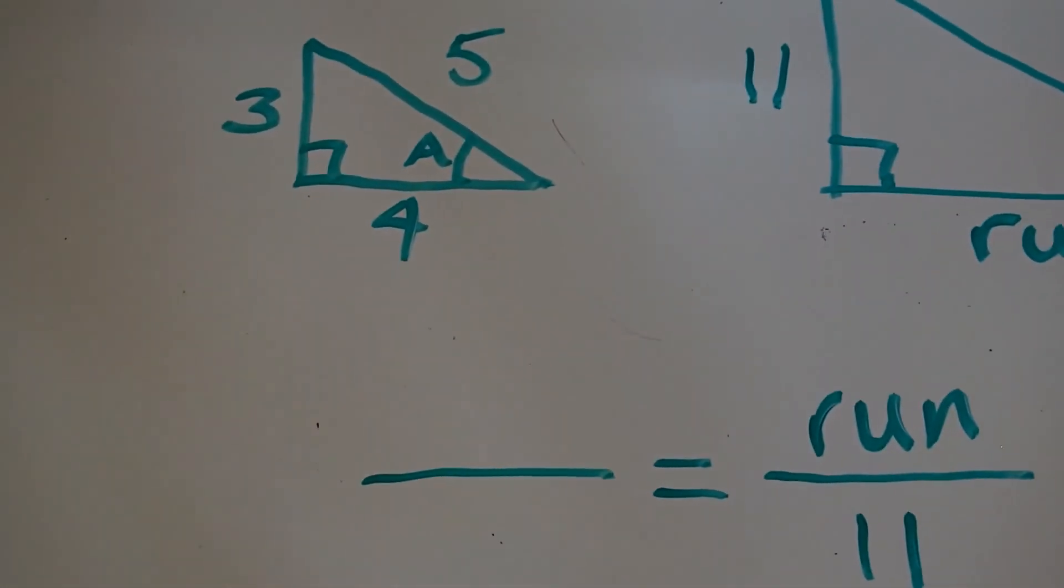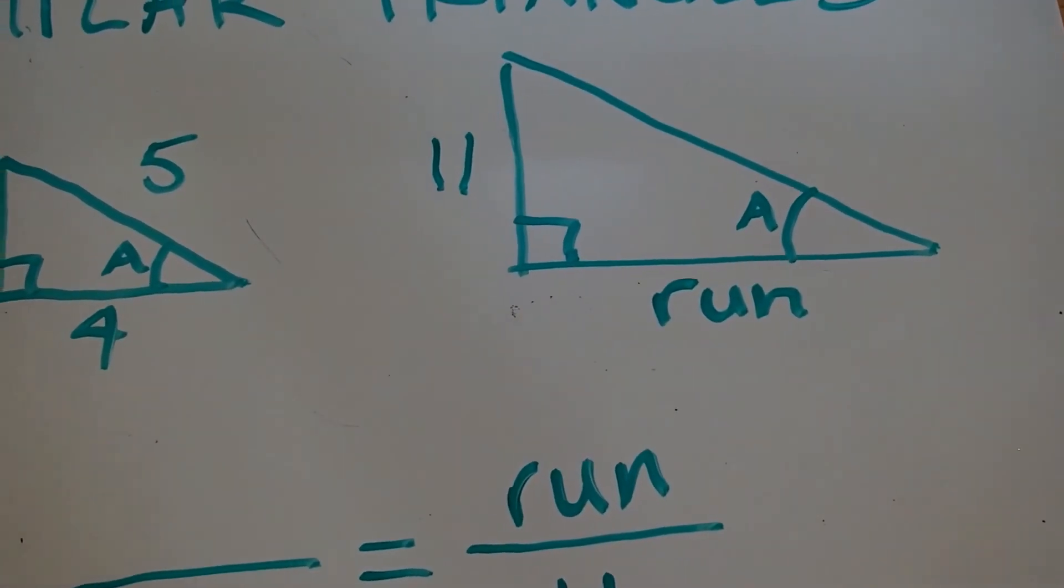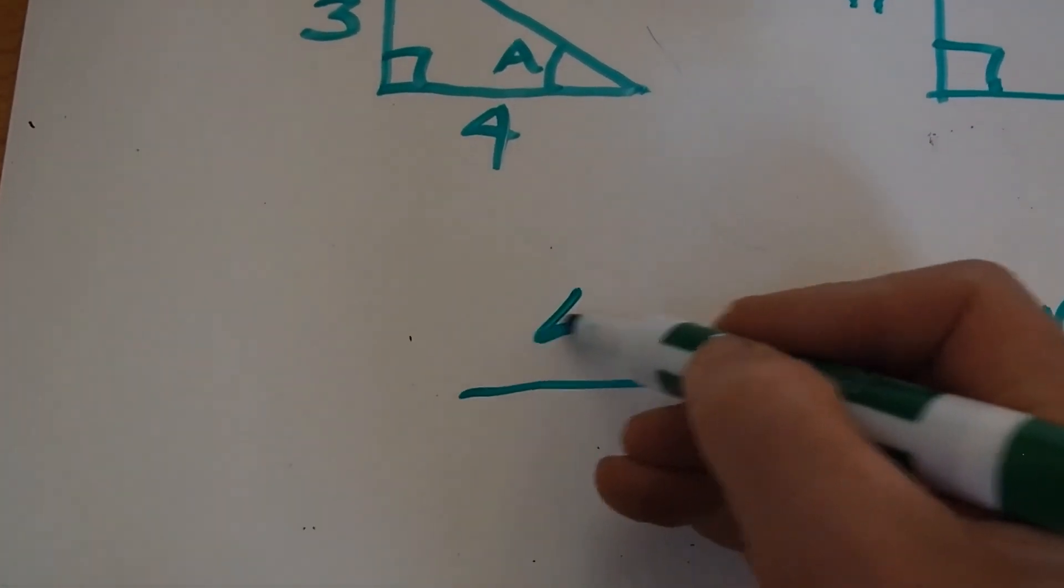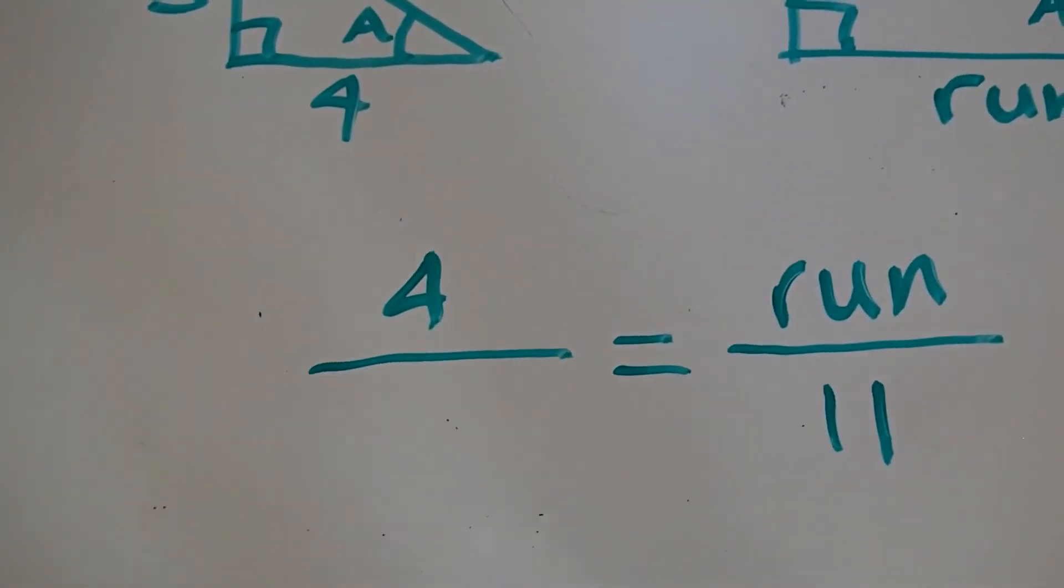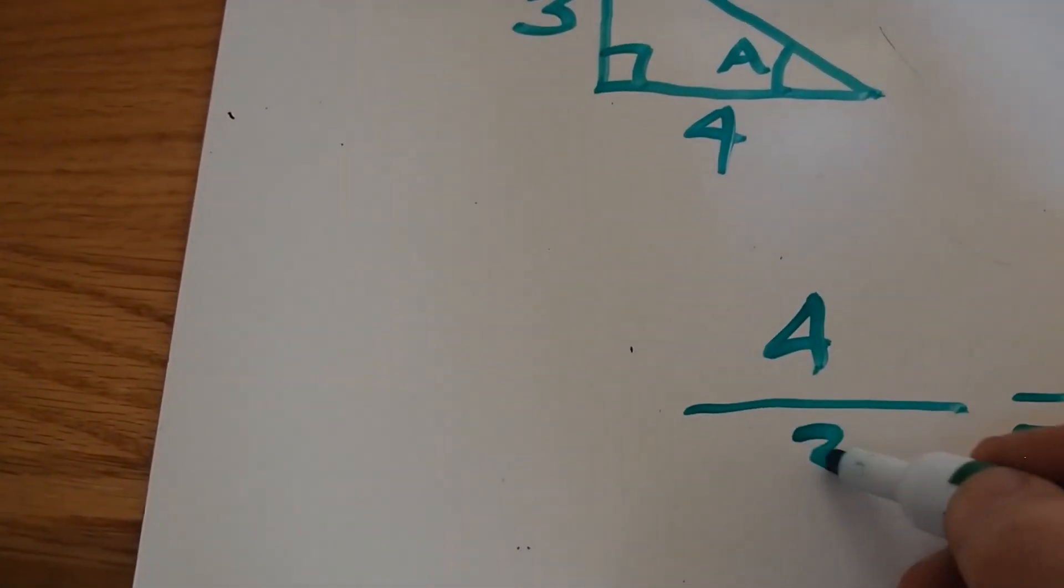For the small triangle, I'm just going to duplicate the pattern that I used on the big triangle. On the big triangle, the run was on the top, so for the small one, I'm going to put the run on the top. And the rise went on the bottom, so I put the rise on the bottom.